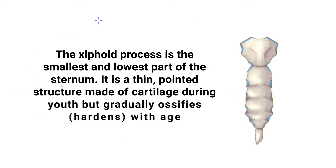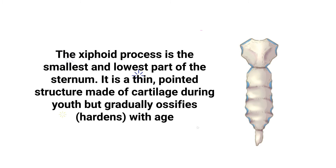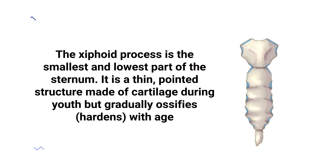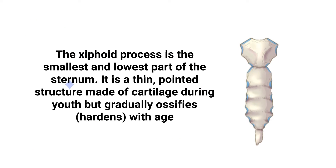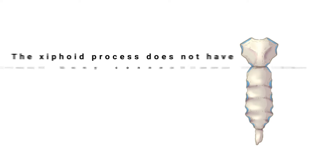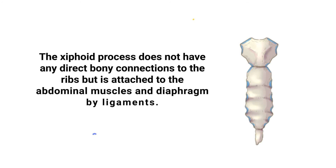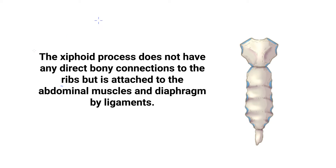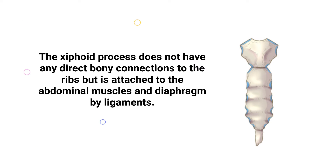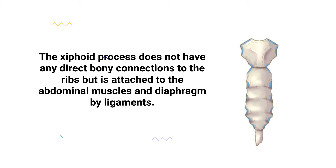The xiphoid process is the smallest and lowest part of the sternum. It is a thin pointed structure made of cartilage during youth but gradually ossifies, or hardens, with age. The xiphoid process does not have any direct bony connections to the ribs, but it is attached to the abdominal muscles and diaphragm by ligaments.